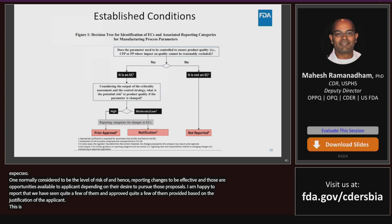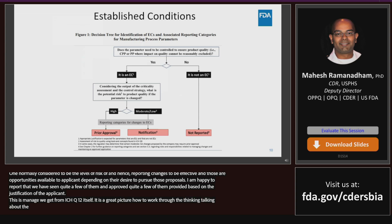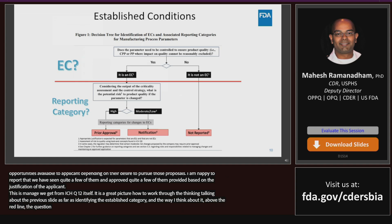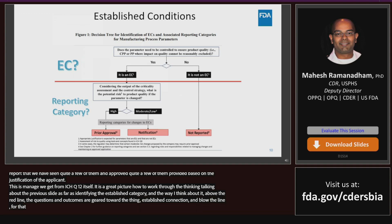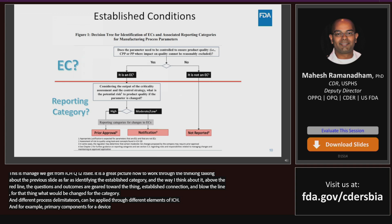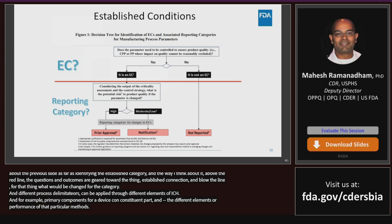There is a figure from ICH Q12 that illustrates how to work through the thinking of identifying established conditions and then the reporting category. Above the red line, the questions are geared toward whether something is an established condition; below the red line, what would be the reporting category if that thing were changed. This figure is specific for manufacturing process parameters but can be applied across different elements of CMC — for example, the performance characteristics for a device constituent part or elements of an analytical method.